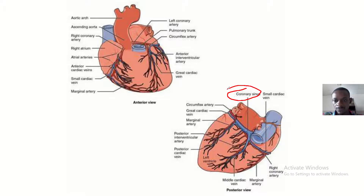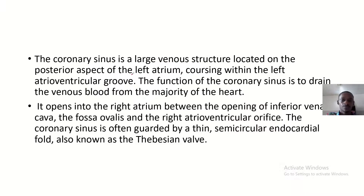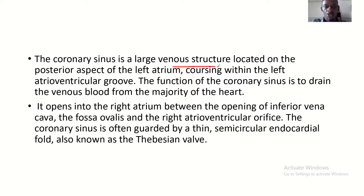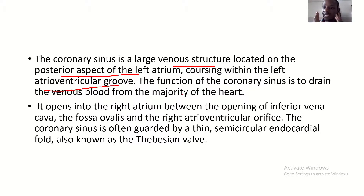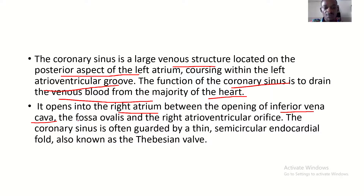The coronary sinus is basically a venous structure around the heart. It is a large venous structure located on the posterior aspect of the left atrium. It courses within the left atrioventricular groove — the groove dividing the left atrium from the left ventricle. The function of the coronary sinus is to drain venous blood from the majority of the heart. It opens into the right atrium between the opening of the inferior vena cava, the fossa ovalis, and the right atrioventricular orifice.